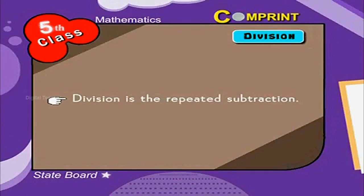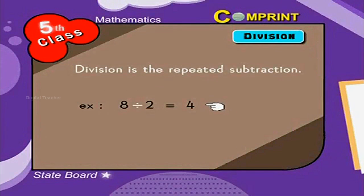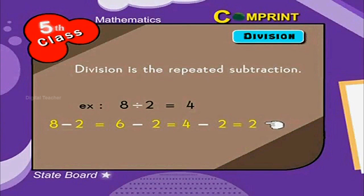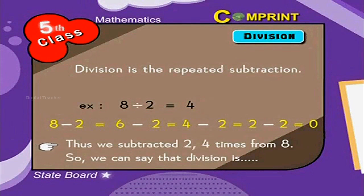Division. Division is the repeated subtraction. 8 divided by 2 is equal to 4. Have a look at it: 8 minus 2 is equal to 6, minus 2 is equal to 4, minus 2 is equal to 2, minus 2 is equal to 0. Thus we subtracted 2 four times from 8. So we can say that division is nothing but a repeated subtraction.